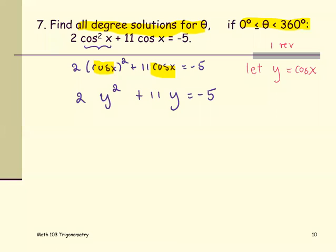We have the quadratic equation, the right hand side is not 0. The strategy to solve the quadratic equation, the right hand side must be 0. So we're gonna add both sides by 5. Equation becomes 2y squared plus 11 times y plus 5 equals 0.